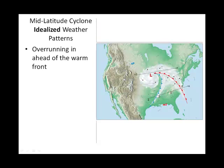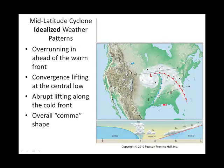Looking at another view of a mid-latitude cyclone before it entirely matured — we don't have the occluded front formed at this time. The author looks at cross-sectional segments of what you would see. For instance, between segment E and A, there are even some points along the way where you end up seeing three distinct sectors of air.